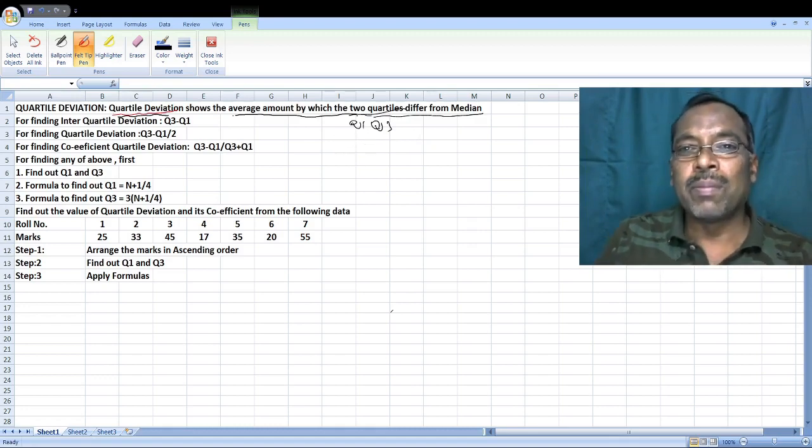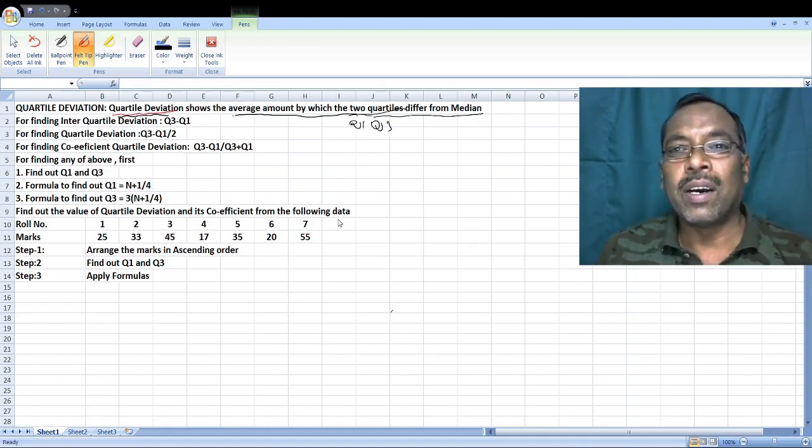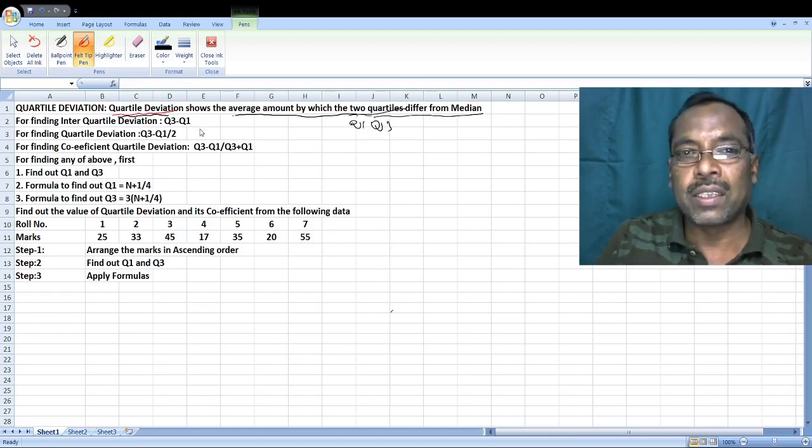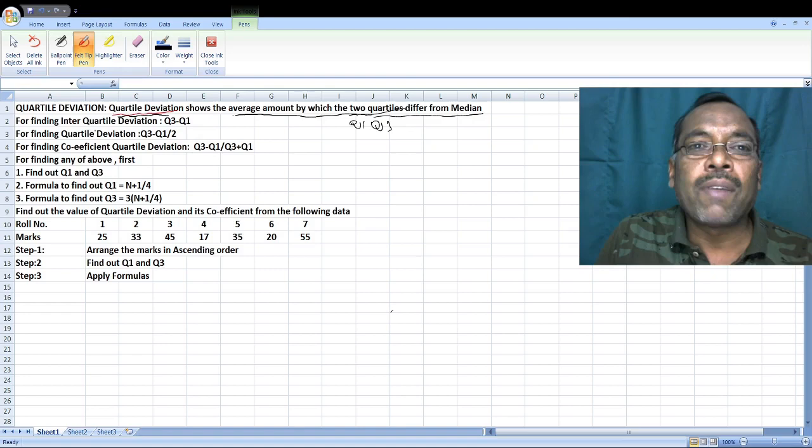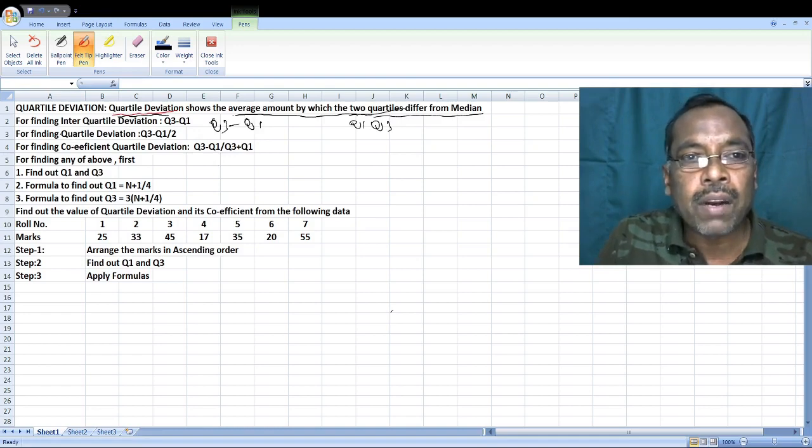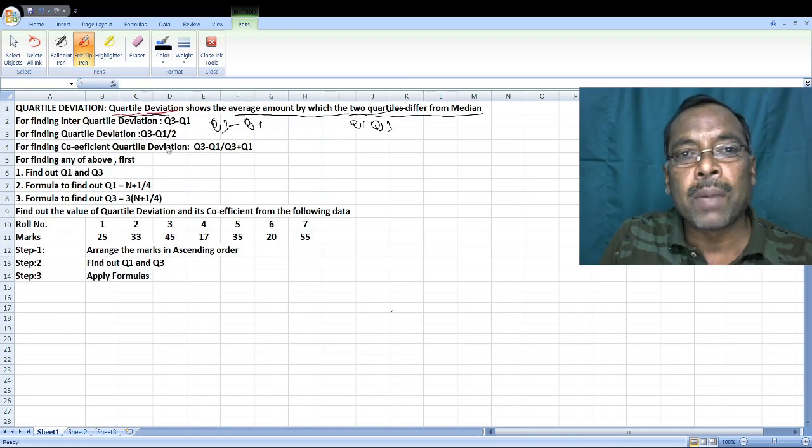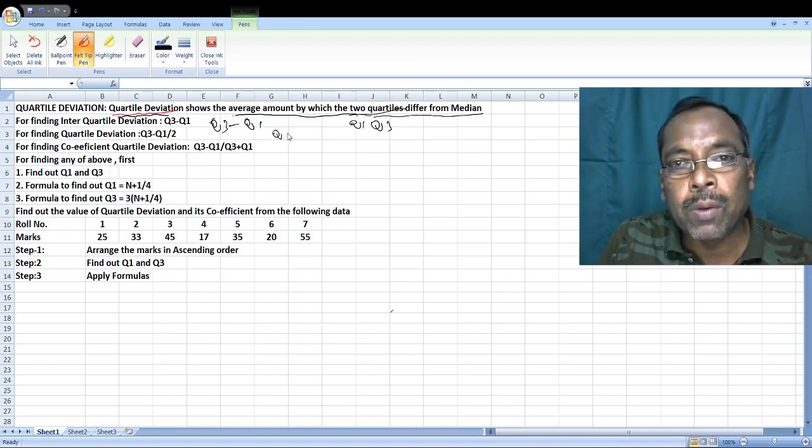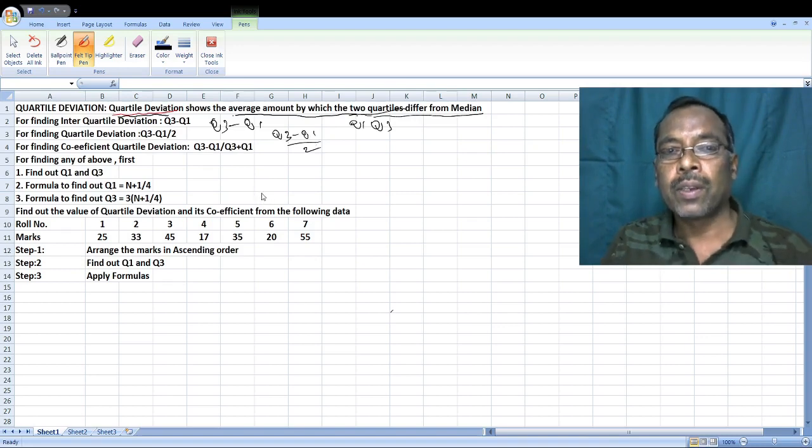Let us know the formulas. For finding inter-quartile deviation: Q3 minus Q1. For finding quartile deviation: Q3 minus Q1 divided by 2.